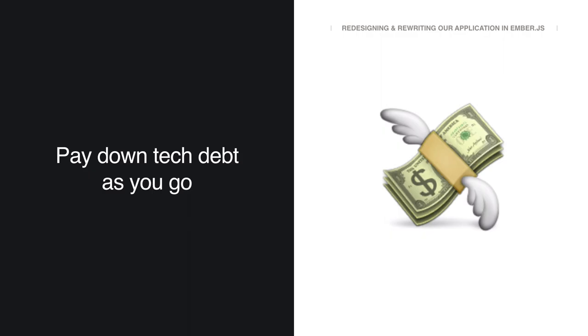Metrics aside, what else did we learn in this migration process? It's a really bad idea to ignore deprecation warnings or let your version stagnate. We learned it's best to pay down tech debt as we went, working on a mix of feature, infrastructure, and tech debt stories rather than waiting until the very end. This meant keeping up with the latest version of Ember was more manageable and our app was more stable.